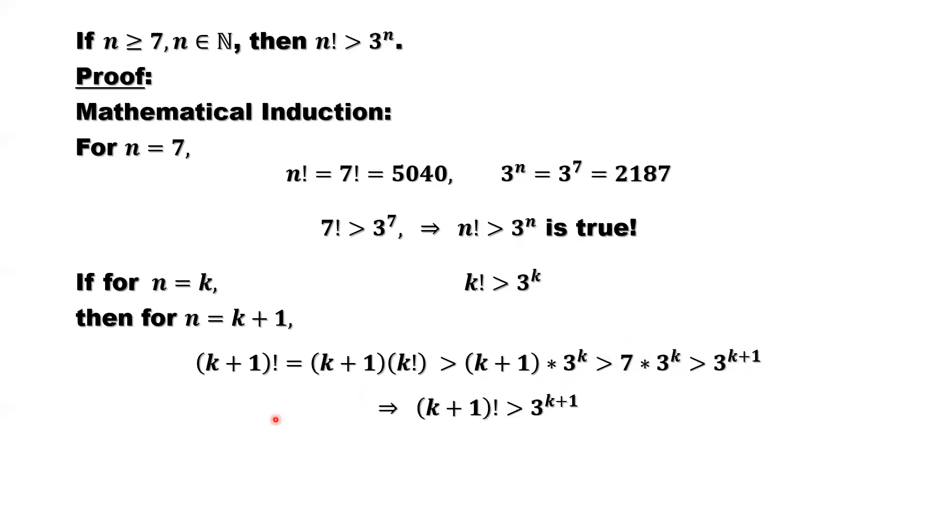Summarize the result. Left-hand side is k plus 1 factorial. Right-hand side is 3 to the power k plus 1. This is what we need to prove.